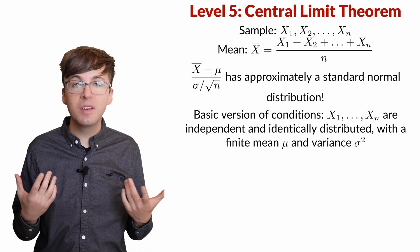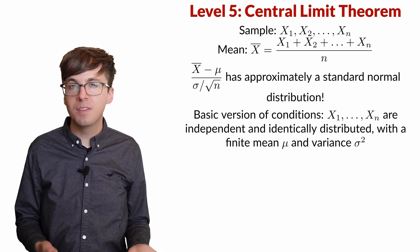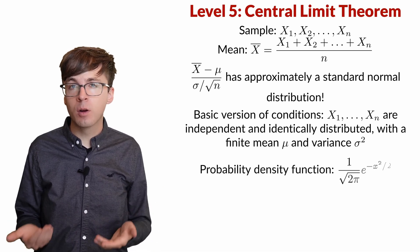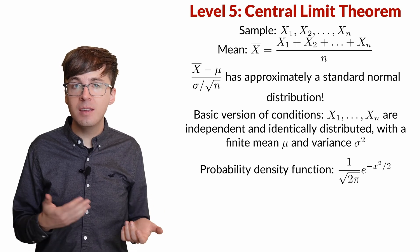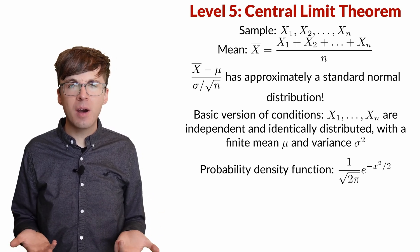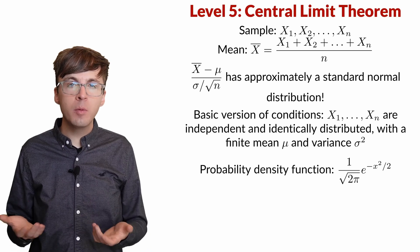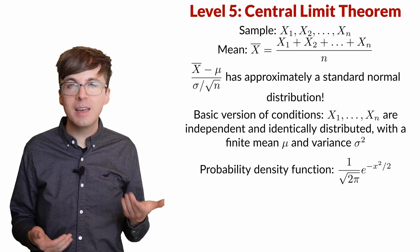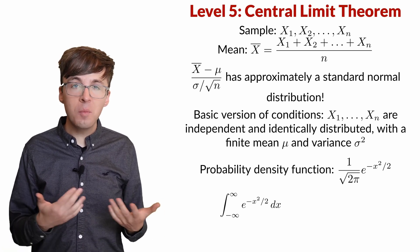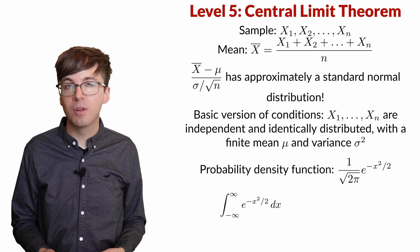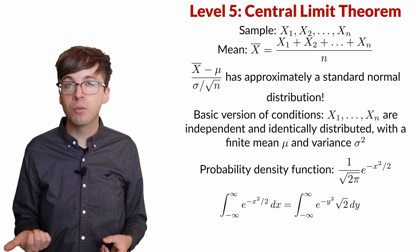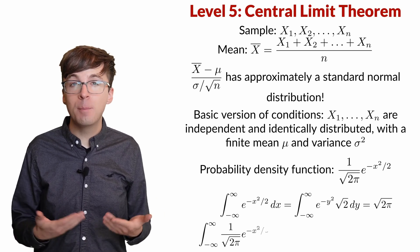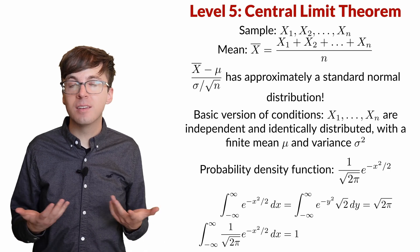Pi plays a prominent role in this normal distribution. The standard normal distribution has probability density function 1 over the square root of 2π times e^(-x²/2). Now where did that pi come from? Well to be a probability density function, the density function must integrate to 1. If we integrate e^(-x²/2), this is almost identical to the Gaussian integral. With a change of variables, we can find that this integral is the square root of 2π. So dividing by the square root of 2π makes this a density function, since its integral is 1.